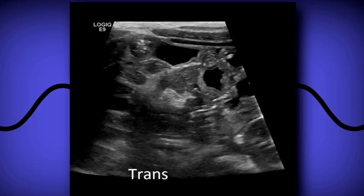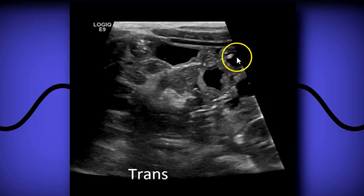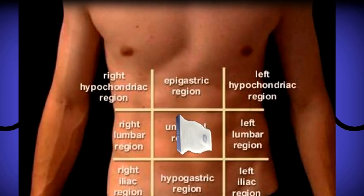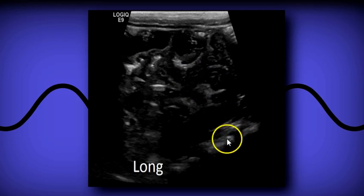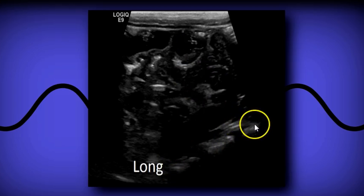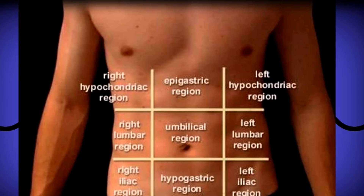After that we go to the umbilical region, where you can have some small bowel — you can see a little piece of the kidney and small bowel here. In sagittal you'll again have some small bowel, and you can see the vertebral bodies right here. That's pretty much your protocol for an abdominal limited scan or an abdomen scan for intussusception.